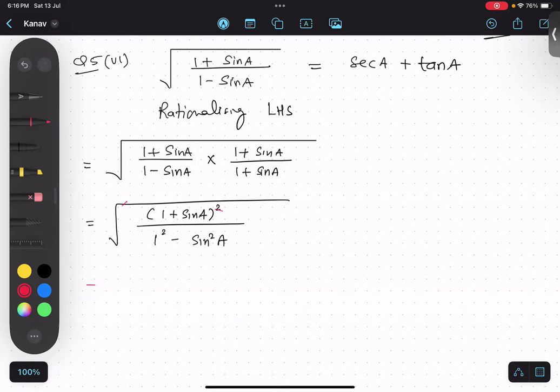So numerator will become outside of the root one plus sine A, but denominator will still have a root, one minus sine square A.